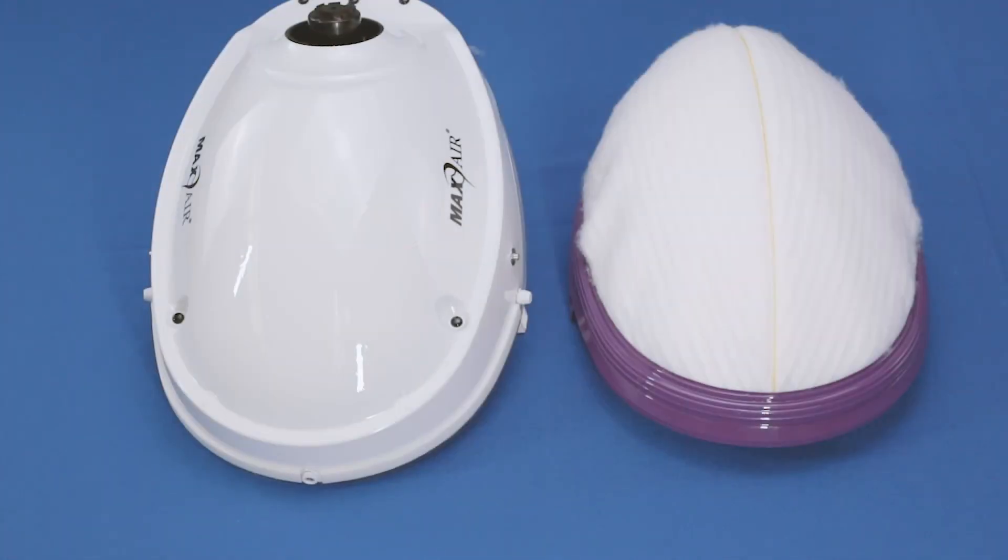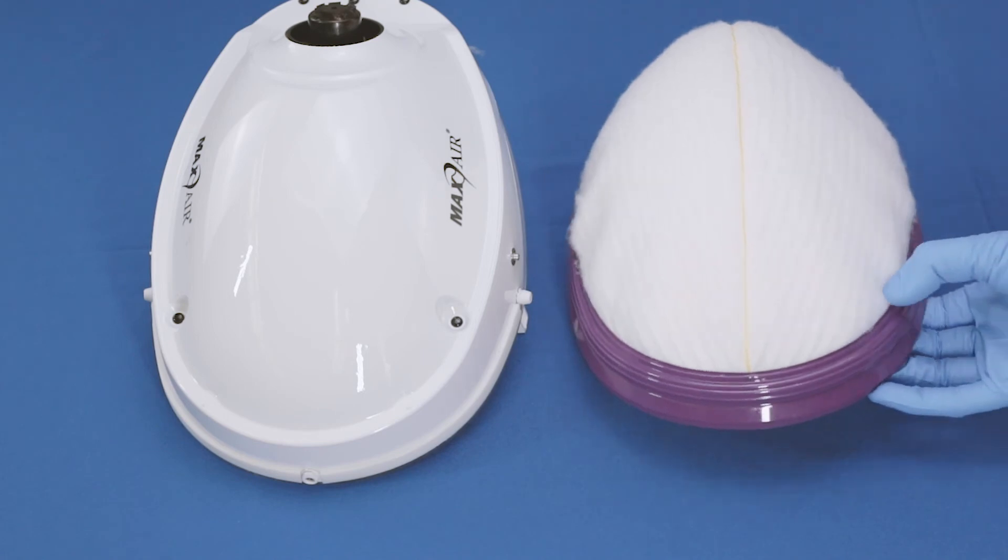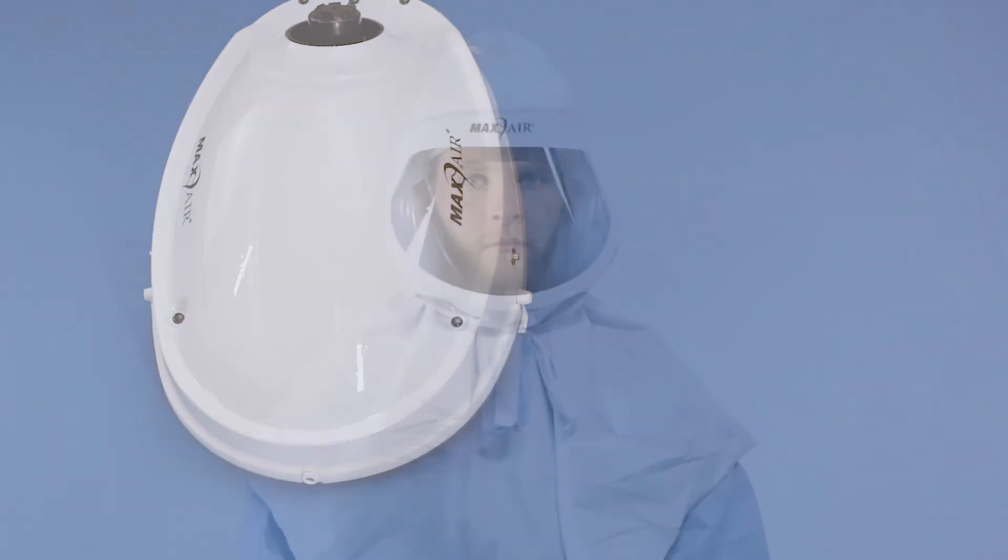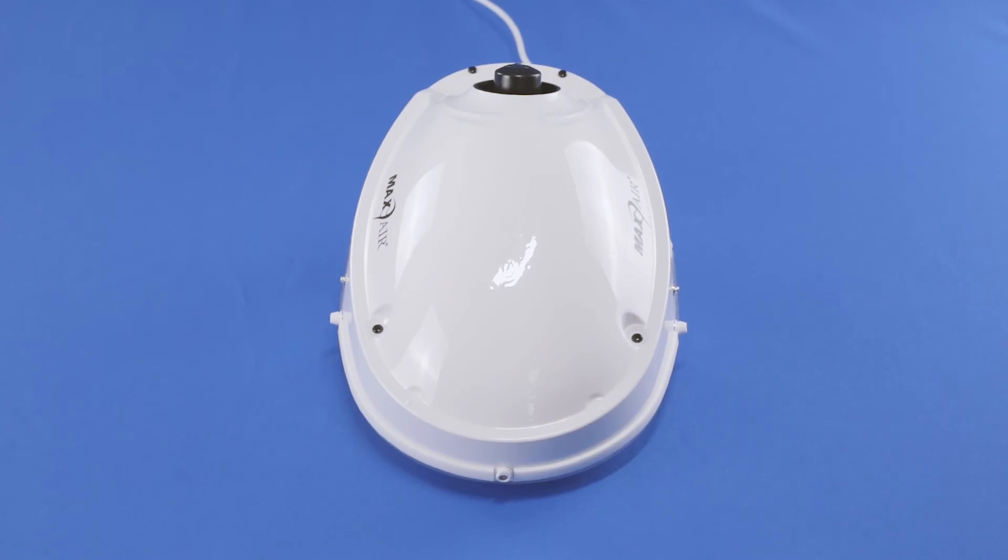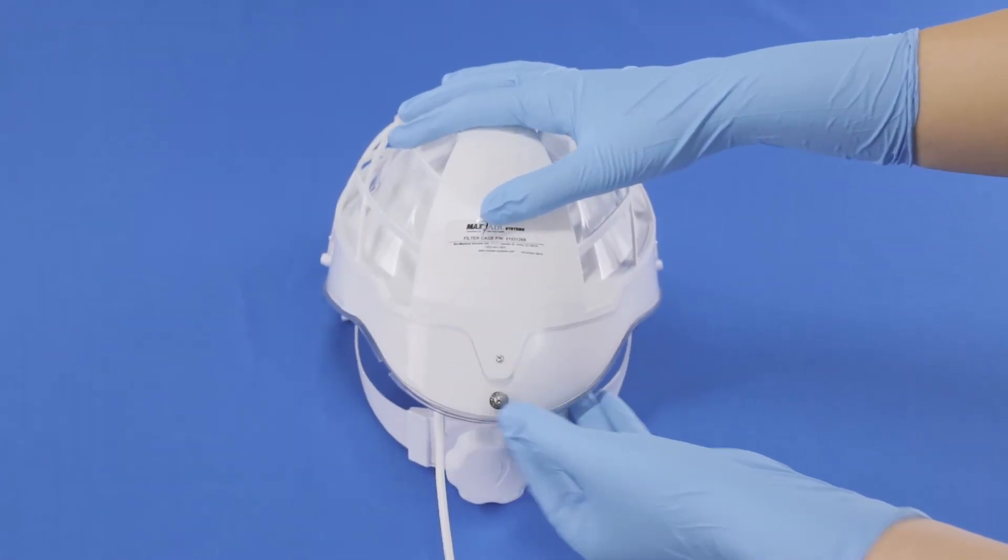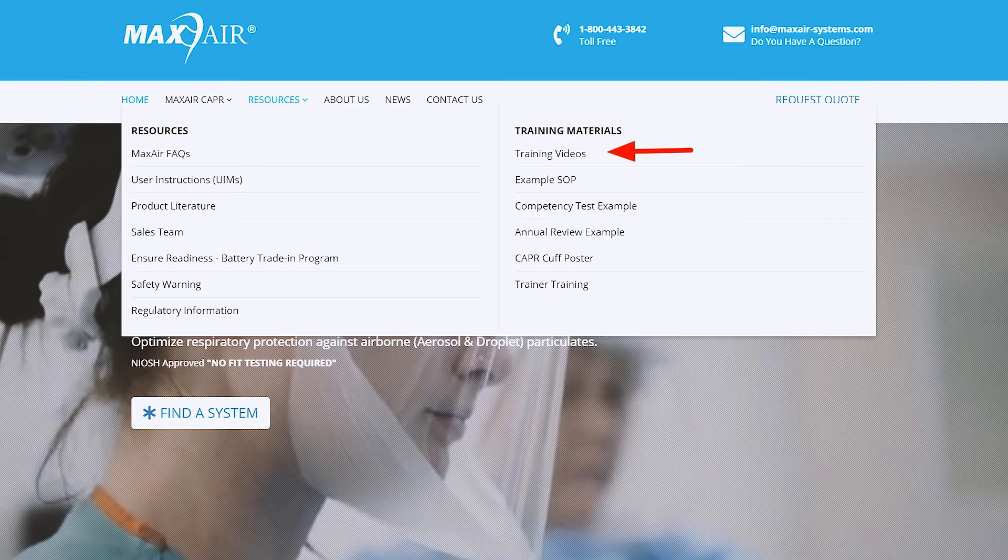Store it appropriately or dispose of it per your institution's protocol for contaminated waste. If you need to use the helmet with a hood or store the helmet without the filter cartridge, assemble the cage to the helmet. Refer to the helmet cage training video.